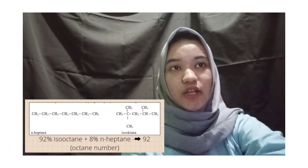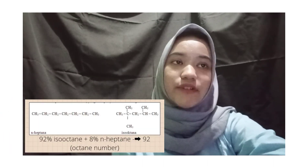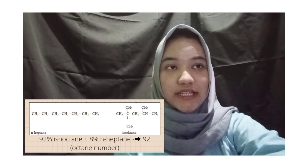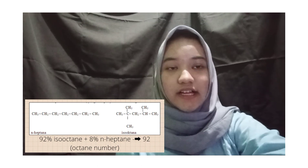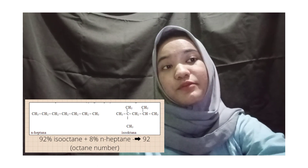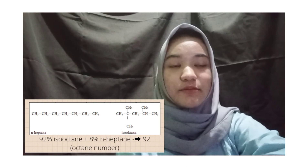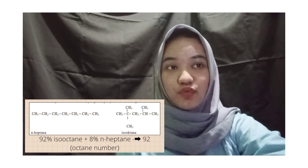The quality of gasoline is determined from the octane number obtained through the combustion test on the gasoline sample, so that combustion character is obtained. For example, Pertamax gasoline, which consists of 92% iso-octane and 8% heptane, produces an octane number of 92.